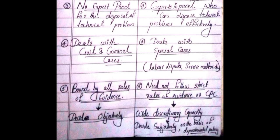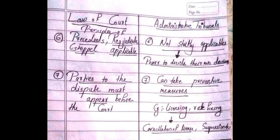Number 5: a Court of Law is bound by all the rules of evidence, so they decide cases objectively. Administrative Tribunals need not follow strict rules of evidence or the CPC — that is, they have wide discretionary capacity. Because of this wide discretionary capacity, Administrative Tribunals can decide cases subjectively on the basis of departmental policy. Number 6: principles of precedence, res judicata, estoppel, etc. are applicable to a Court of Law, whereas these principles are not strictly applicable to Administrative Tribunals.